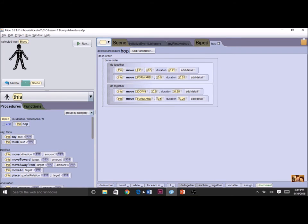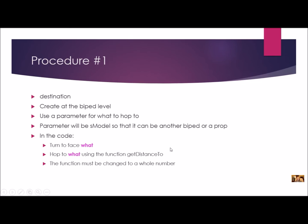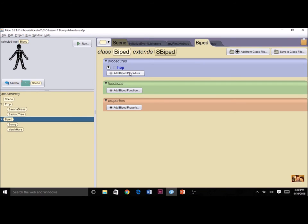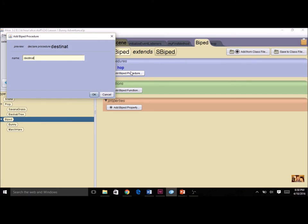Now we're going to add a biped procedure to make the bunny hop to something. Here are the requirements for procedure number one — we're going to call it destination and create it at the biped level. We'll use a parameter for what to hop to, using type SModel, because sometimes we'll hop to another biped and sometimes to a prop, so SModel works for any object. In the code, we'll do a turn-to-face, then hop using a function. We need to change the distance function result to a whole number for use in our count. All procedure names should be lowercase — reserve uppercase letters for a special reason.